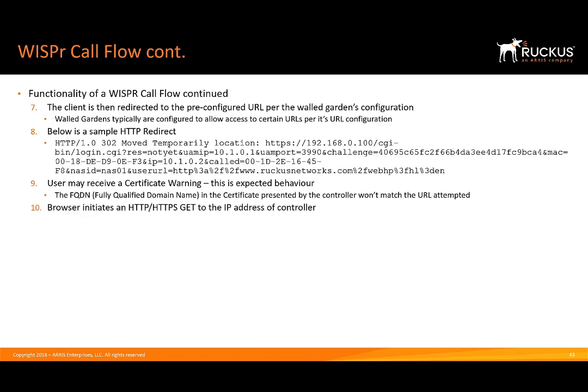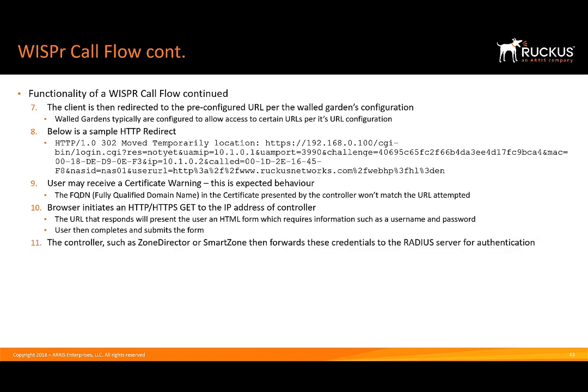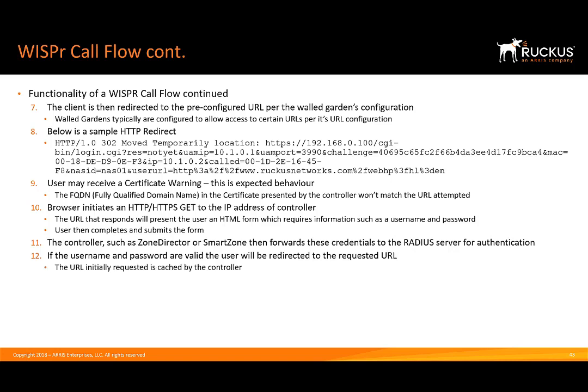The browser is going to initiate an HTTP or HTTPS GET to the IP address of the controller. The URL that responds will present the user with an HTML form where you'll enter a username and password. Sometimes the venue provides those credentials, other times they'll give you a piece of paper with the SSID, username, and password on it. Payment information may also be included. The user completes and submits the form, and the controller — such as Zone Director or SmartZone — forwards those credentials to the RADIUS server for authentication. Assuming correct input, the user is redirected to the originally requested URL, which the controller had cached, completing the WHISPER connection process.